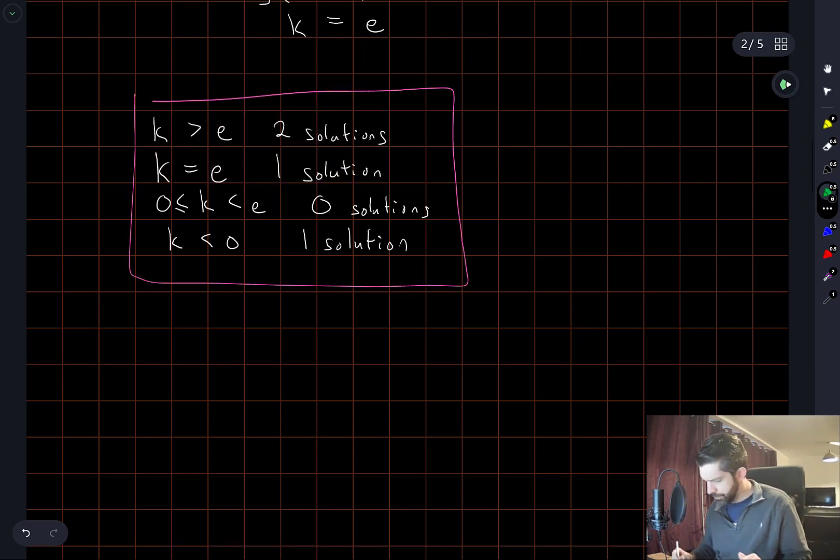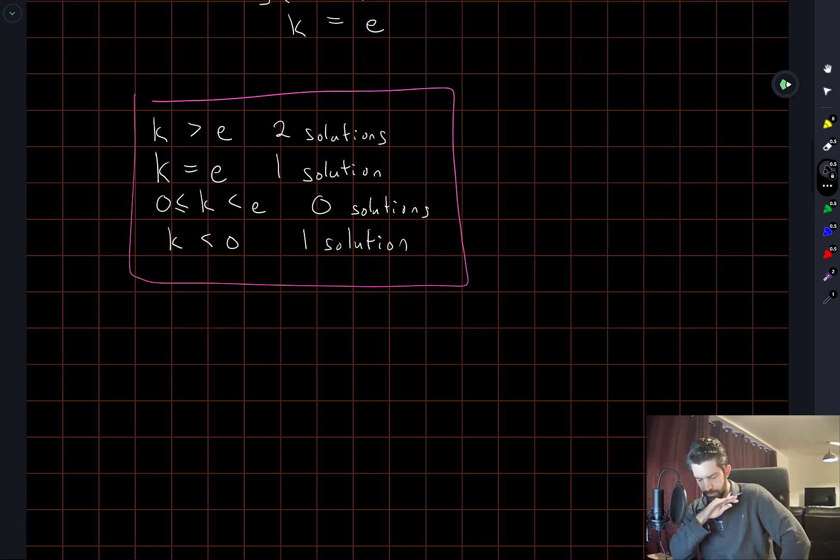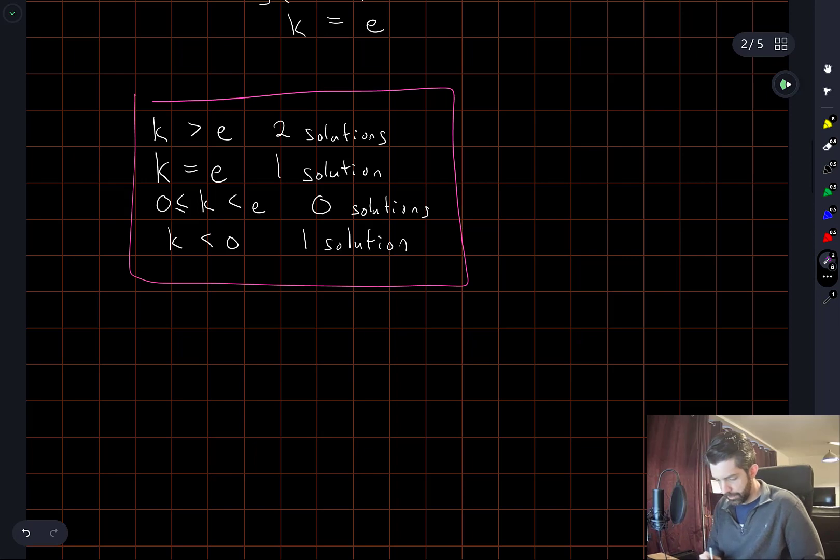This really came down to just as soon as I saw the relation that we're thinking about here, just visualizing what the graphs of these two functions look like and how they could possibly intersect or not. And then the key in figuring out the boundaries between where we change from 0 to 1 to 2. I think solving for that point of tangency is still the only clear way that I see to figure this out. But maybe there's another clever way of doing it. Thanks for watching.